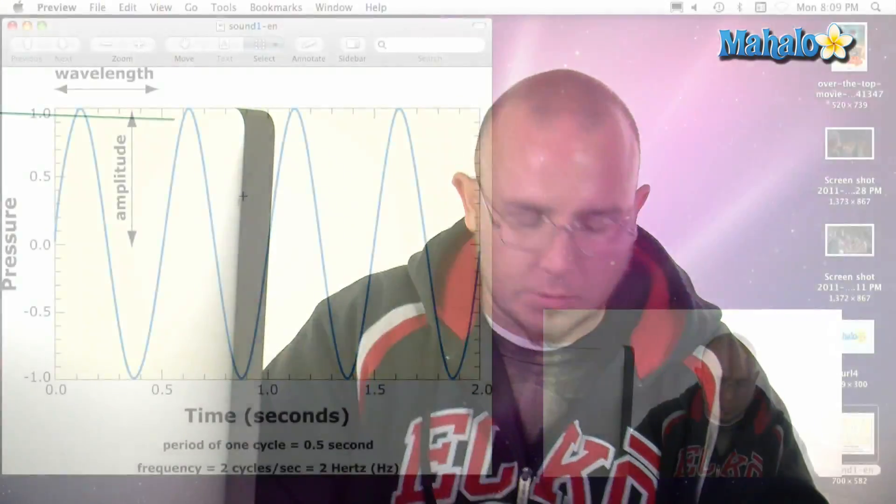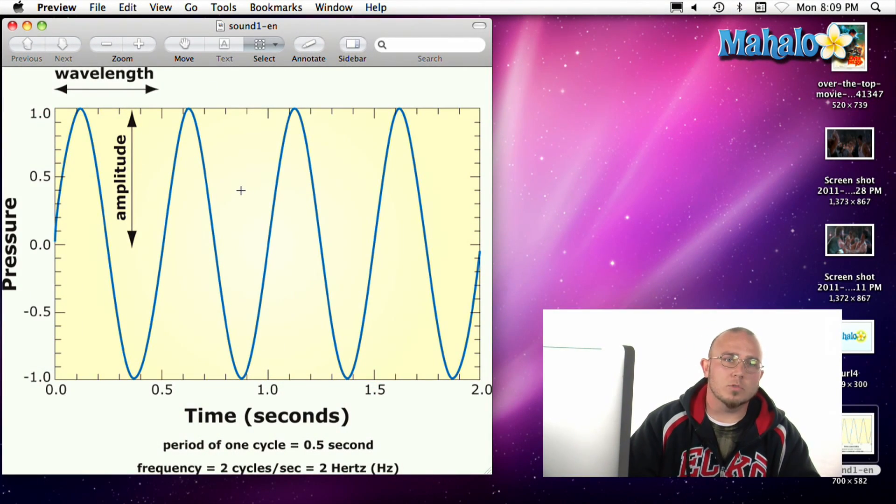Basically the first thing you should know is that human hearing is from 12 hertz to about 20 kilohertz. That means, well, a hertz, let's break it down, a hertz is cycles per second.